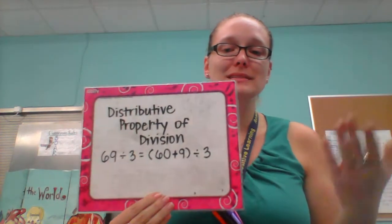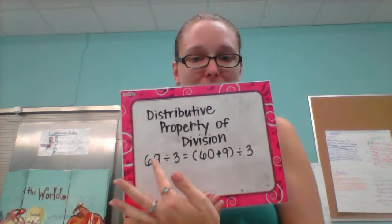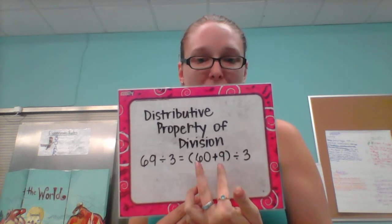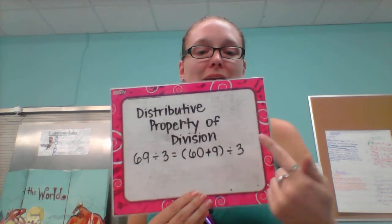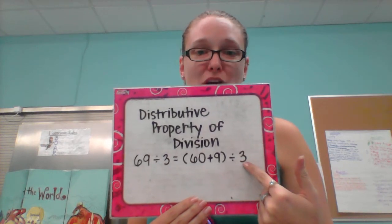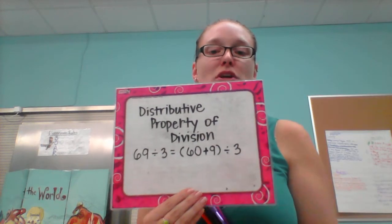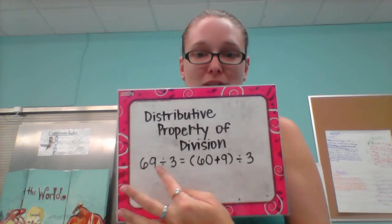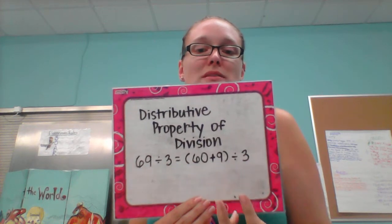This one is using the distributive property. The distributive property of division basically states that you can take a dividend and divide it into two addends and divide each addend by the divisor and you will get the same answer like you just taking the dividend and dividing it by the divisor.